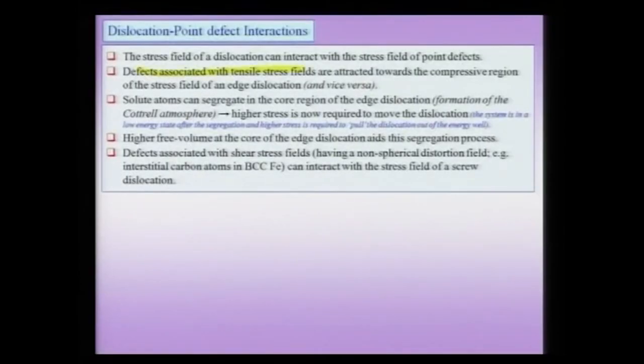This implies that point defects can actually interact with the elastic stress fields of a dislocation, and this interaction can lead to certain kinds of segregation or attraction. Defects associated with tensile stress are attracted towards the compressive region of the stress field of an edge dislocation. Screw dislocations have only a shear stress field, and therefore if a defect has a shear stress field it can interact with the shear stress field of a screw dislocation.